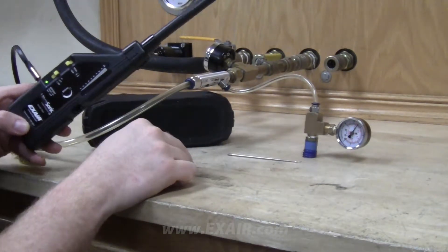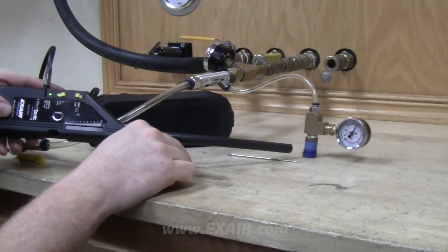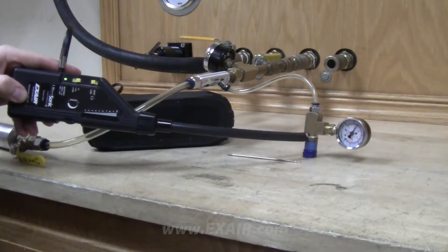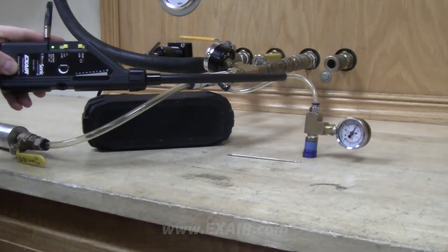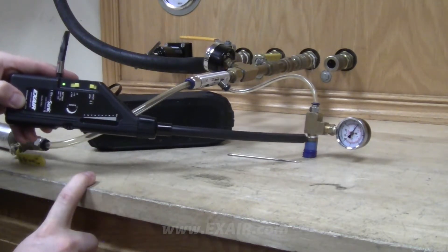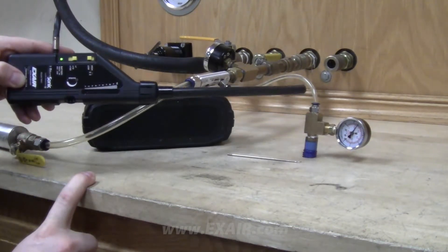We have 21 inches of mercury in vacuum and you can see the ultrasonic leak detector is picking up some air moving through the line but no indications of a leak are showing up on the LED indicator.